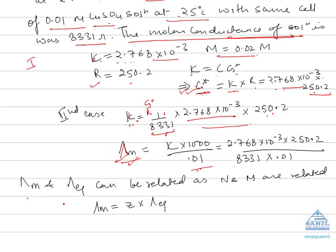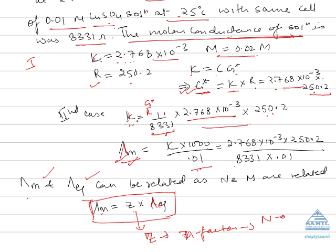Molar conductance and equivalent conductance are related because molar conductance is related to molarity and equivalent conductance is related to normality. The relationship is: molar conductance equals z times lambda-equivalent, where z is the n-factor used to convert normality into molarity. The n-factor depends on the substance: for an acid it is the number of H⁺ ions, for a base it is the number of OH⁻ ions, and for any electrolyte it is the valency of that electrolyte.